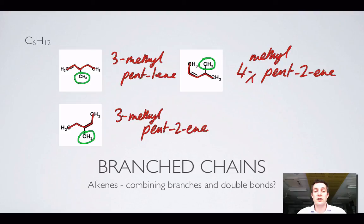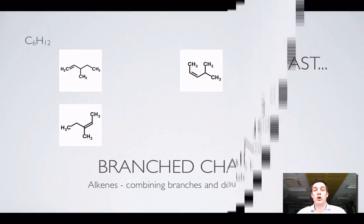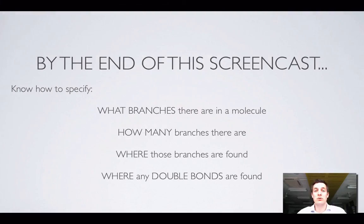To recap what we've covered: identifying what branches there are, finding the longest chain, saying where the branches are attached and how many there are, and locating the double bond in alkenes. The best way to check your understanding is to practice naming molecules. If you have any questions or think I've made any mistakes, please post a comment on YouTube or come and ask for help.